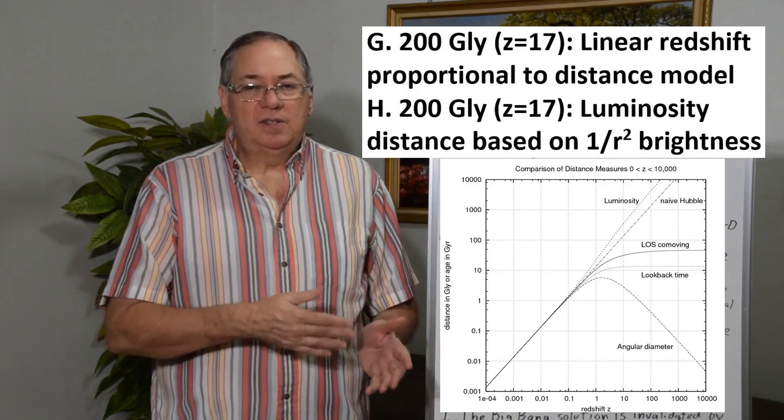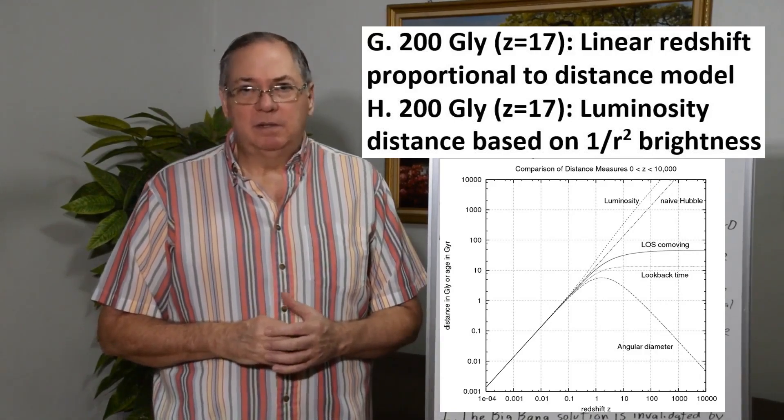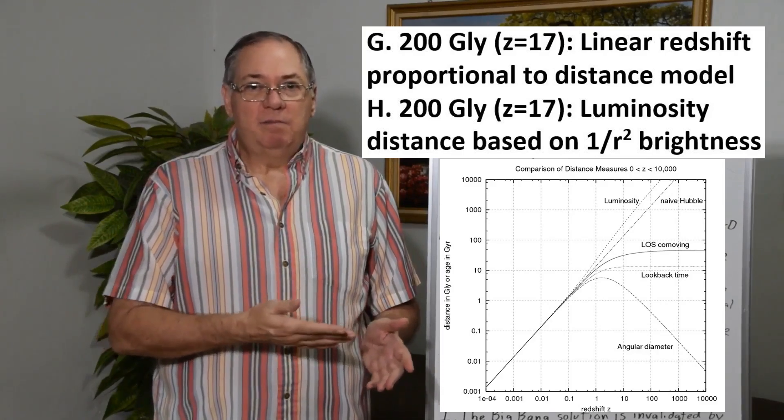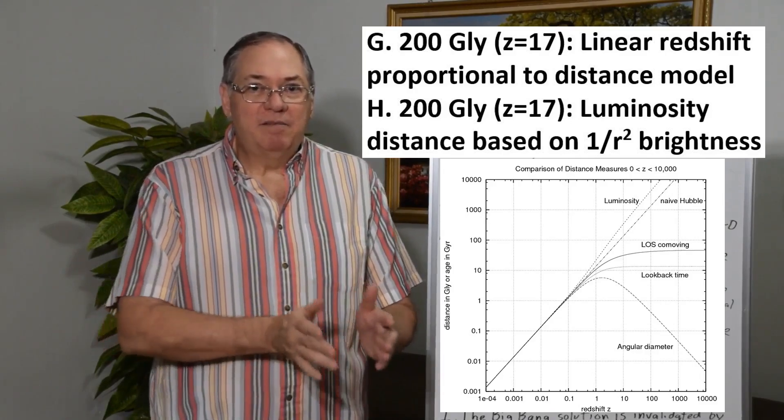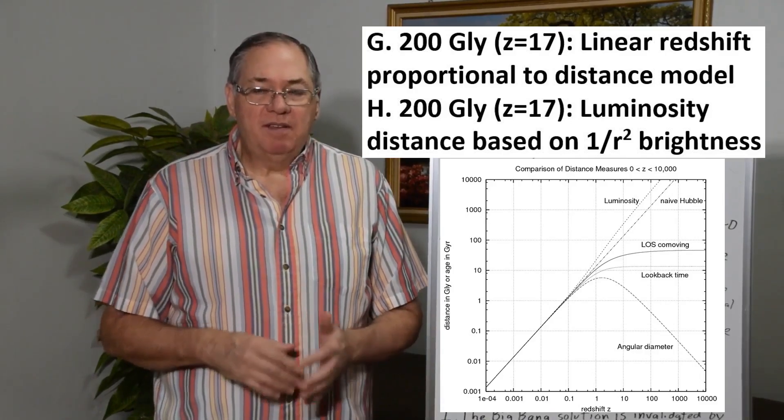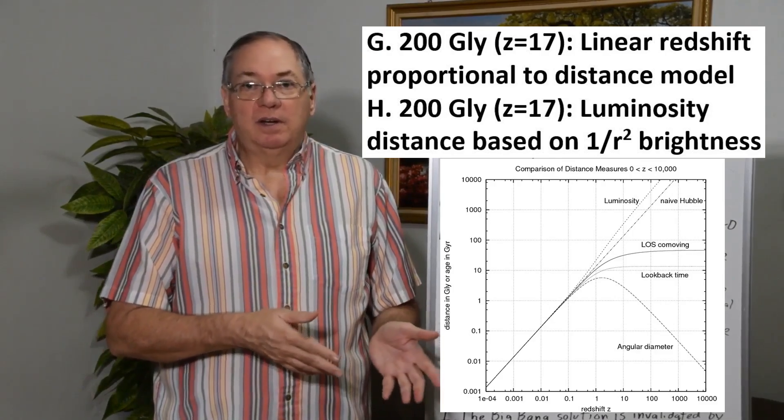So the two models, the linear Hubble and the luminosity distance model, are very similar. But it's notable that the other redshift model, where you get compounding redshift as a percentage with distance, is significantly different. 38.2 versus 200 approximately.